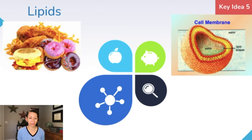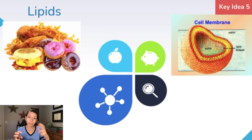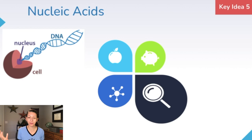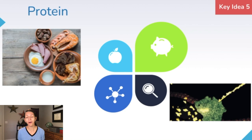Lipids are important structural components and also help with long-term energy in the cells. One really important function of lipids is that they compose the membranes of all cells — our cell membranes are formed of a phospholipid bilayer with a phosphate head and two lipid tails. Nucleic acids contain all of the genetic information and the instructions to build every protein that our body needs, and proteins are like the workers of the cells.